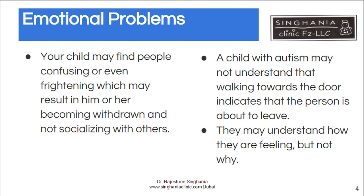Children with autism find other people's actions a little confusing. They may find it difficult to understand why a certain person is doing something. For example, when a person walks towards the door in a huff and slams the door, they may not understand that the person is angry. Or if a person looks at their watch, they will think the person is checking the time, not that the person is running late.